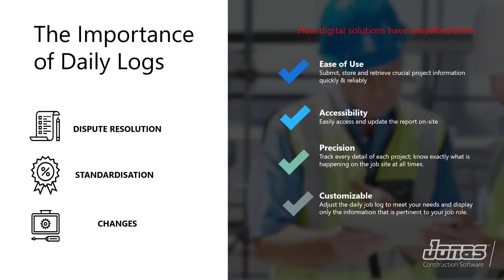I also want to talk about the importance of daily logs. A construction daily log is used to record everyday progress on construction projects. First, dispute resolution: according to Plan Academy, in 2019 the overall costs for the construction industry due to legal disputes was $42.8 million, and a legal conflict can on average last 14 months. Daily logs can be an objective source of truth and aid in resolving these conflicts. Additionally, standardization is important — once a scenario is documented in a daily log, everyone can go back and review that information at any time in the future, saving workers time and money.